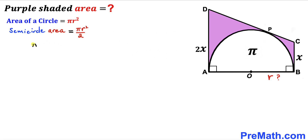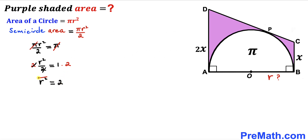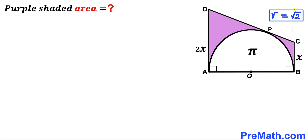So we write πr²/2 = π. The π on both sides cancels out, giving r² = 2. Taking the square root of both sides, the radius r turns out to be √2 units.